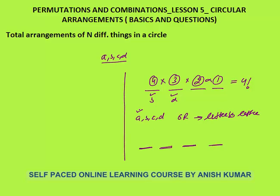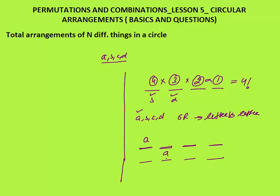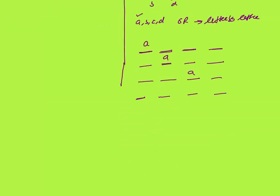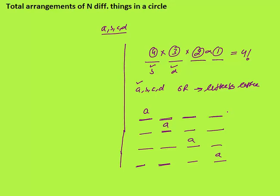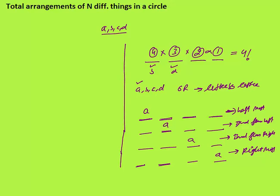Now let's say I want to first place A. For A, there are 4 different positions. If A comes at the leftmost place, that is a different position. If A comes second from left, that is a different position. If A comes second from right, that is a different position. And if A comes at the rightmost place, that is a different position. So all 4 positions are different for A in a linear arrangement.